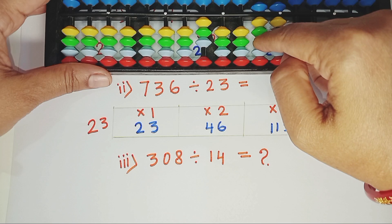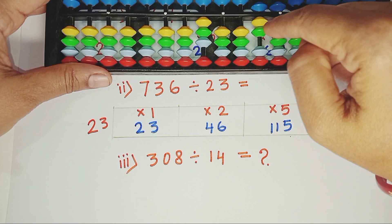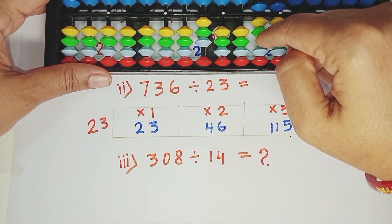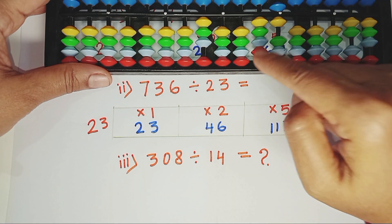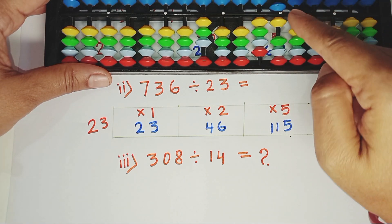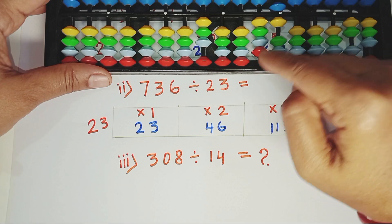We need to subtract 3 from that rod. As we cannot subtract 3 directly, we need to apply 5's complements. Subtract 5, add 2. 4 is left. Again, we need to consider 2 rods. 4 and 6, which is 46.